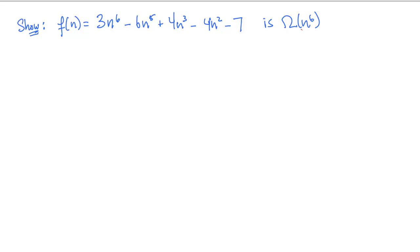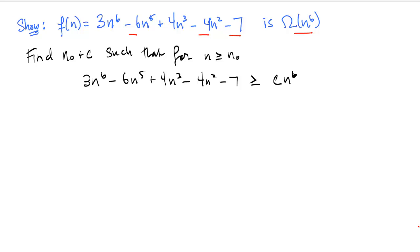We're going to show that this function f, which is a degree-6 polynomial, is Ω(n⁶). In this example, some of the lower-order terms — the terms with exponents less than 6 — have negative coefficients. According to the definition of omega, we need to find positive constants n₀ and c such that for any n ≥ n₀, the value of f is greater than or equal to c times n⁶.